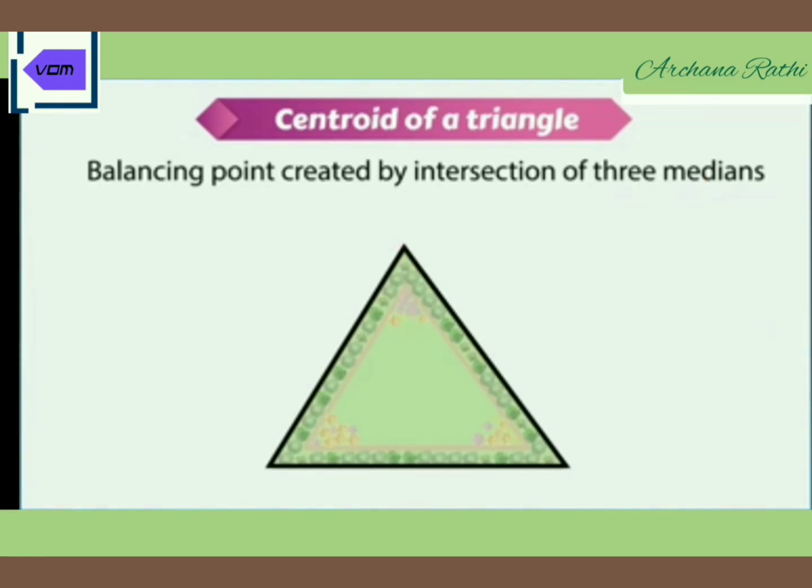How can we find the centroid? As we know, the centroid is the intersection of three medians. Let's draw the median for better understanding. Given triangle ABC, find the midpoint of BC. Let's name it D. Join midpoint D to the opposite vertex A, so we got median AD. Similarly, we draw medians BE and CF.